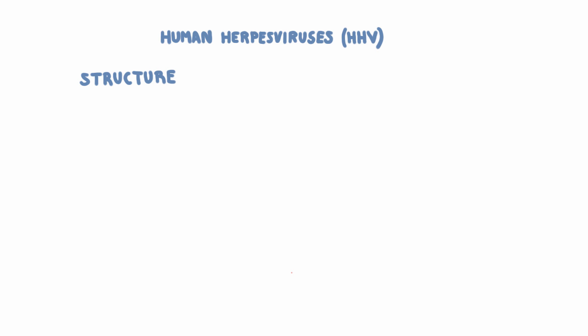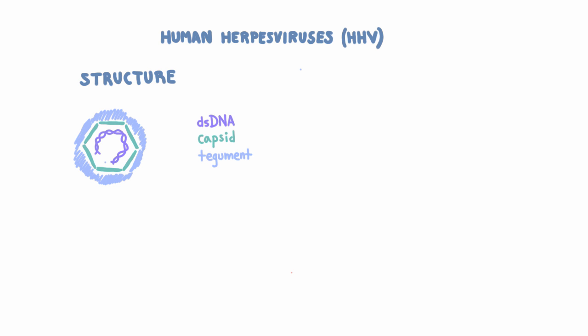Now let me give you the 411 on herpes viruses and their structure and replication. Starting with structure, they are all double-stranded DNA viruses, which means a low mutation rate. Structurally, the DNA is in the viral core surrounded by capsid, and then around that there's tegument, and around that there is an envelope with glycoproteins that extend beyond it. An envelope might seem protective, but envelope viruses are actually more labile or less stable in the environment, so herpes viruses will not hang around in the environment that much.